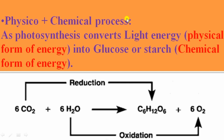Photosynthesis is a physico-chemical process. It is a physical form of energy — that is sunlight — and the glucose to starch is a chemical formation, so it is a physico-chemical process. Another part is it is an oxidation and reduction phenomenon: the water molecule is oxidized to oxygen and the carbon dioxide molecule is reduced to glucose. Next, it is an endergonic or endothermic process because it requires energy.